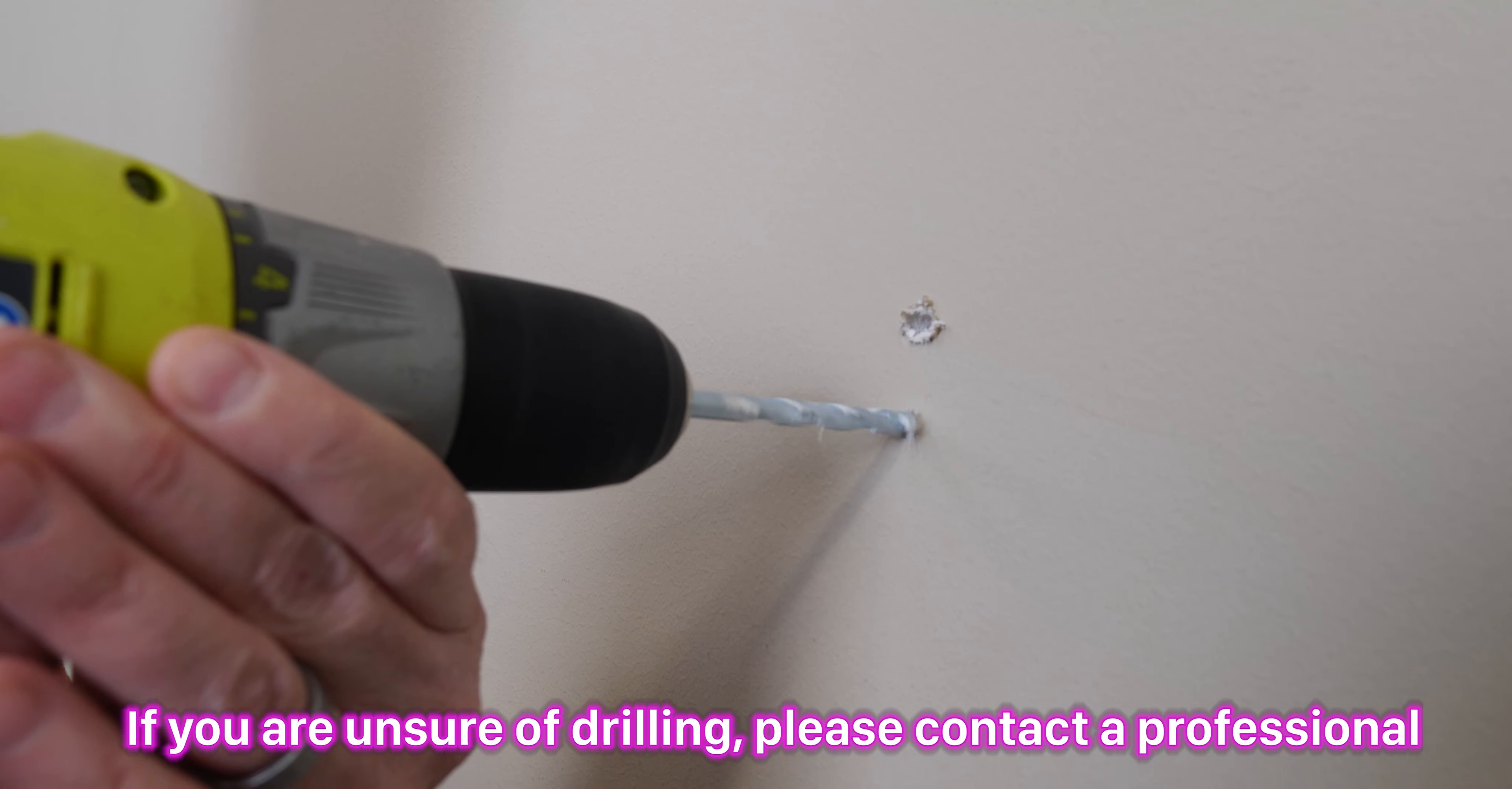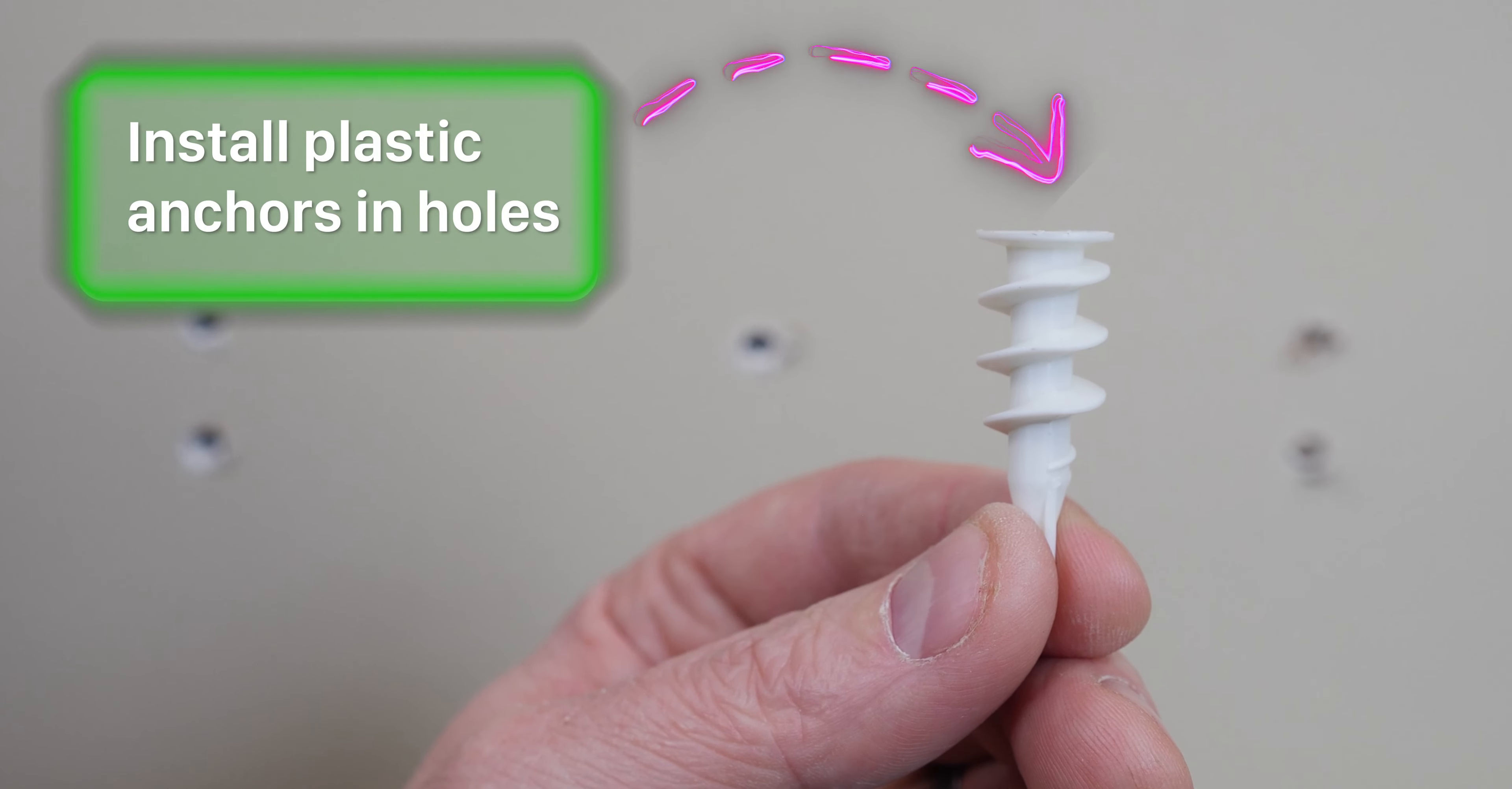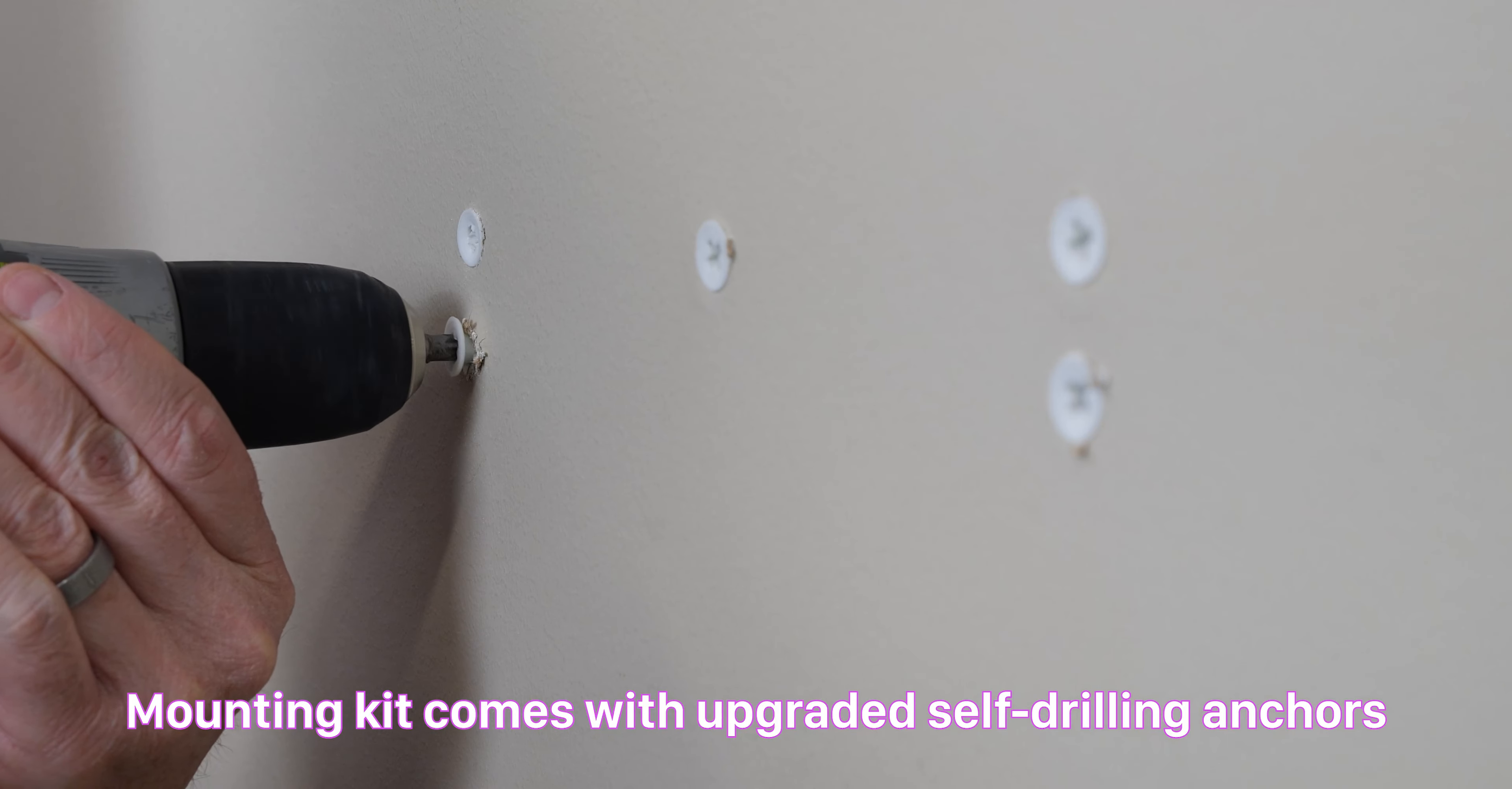If you are unsure of drilling, please contact a professional or a person that knows how to drill holes properly to do the drilling. After drilling your five holes, install the anchors into the drilled holes. The Fossman PS5 wall mount with dual charging dock uses upgraded self-drilling anchors.